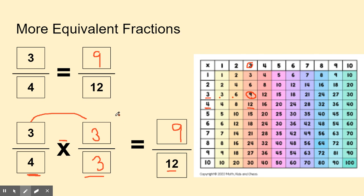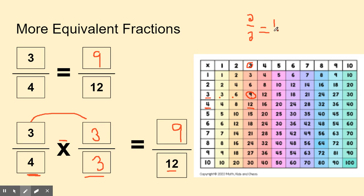A little pop quiz: three over three is also equal to what? Three over three is equal to one. Anytime the numerator and the denominator are the same, that's equal to one. So two over two is equal to one, three over three is equal to one, and so on.